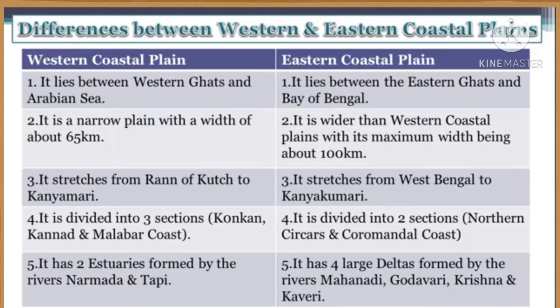The western coastal plain is a narrow plain with a width of about 65 km. The eastern coastal plain is wider than the western coastal plain, with its maximum width being about 100 km.